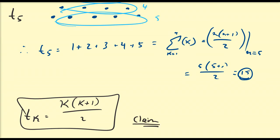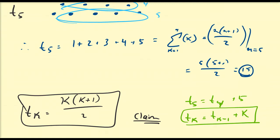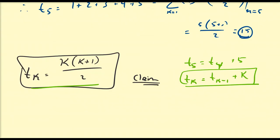Using this geometrical interpretation, we can see that t5 equals t4 plus 5. So in general, tk equals tk minus 1 plus k. We're going to use this result in a proof of our claim using mathematical induction.